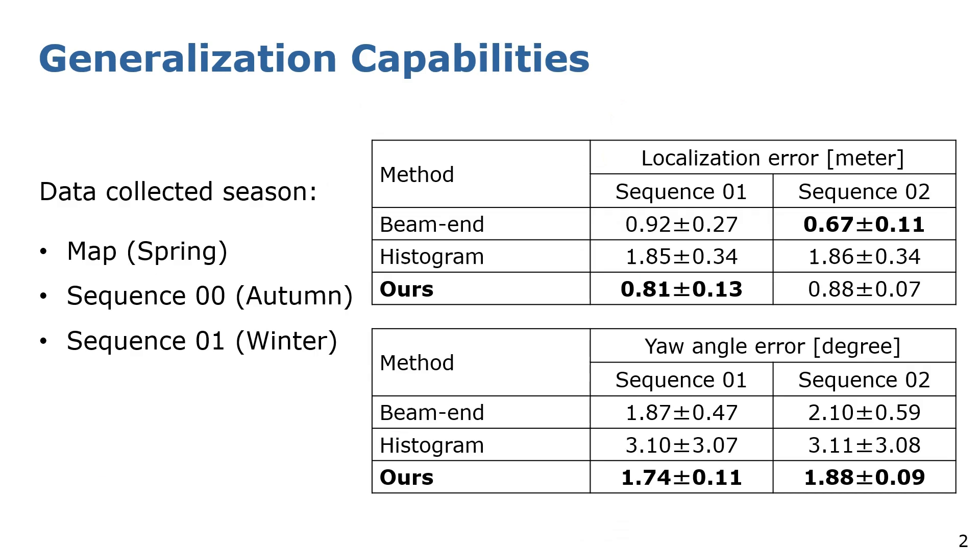Here we also show the quantitative results of using our localization system over different seasons. We built our map using the LiDAR data collected in spring and tested it with data collected in autumn and in winter. As can be seen, our methods outperform other baselines and have good generalization over different seasons.